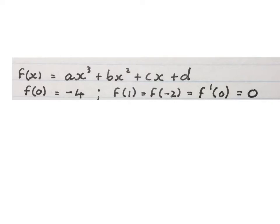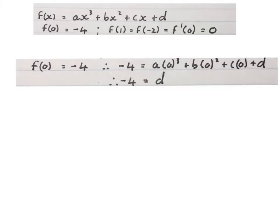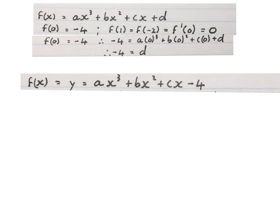In this problem we work with the original f(x) and we also need the first derivative. Because they told us f(0) = -4, we replace y with minus 4 and all x values with 0. We see that d is equal to minus 4, since 0 times anything is 0 and those terms fall away. So we now know the equation has a y-intercept of minus 4.